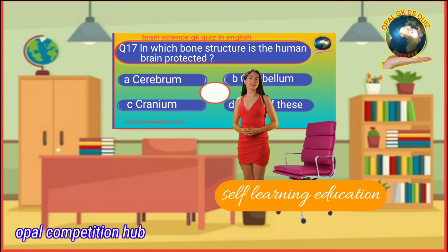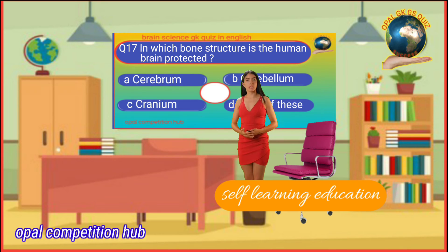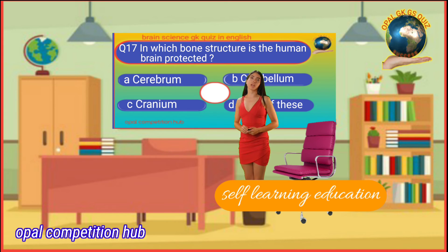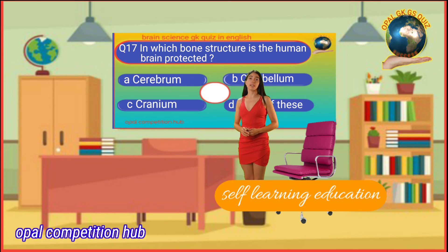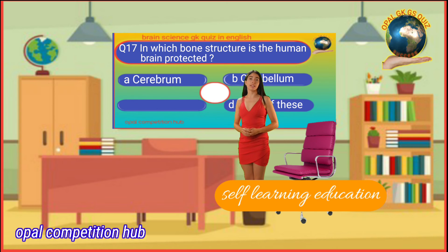Question number 17: By which bone structure is the human brain protected? Option A: Cerebrum. Option B: Cerebellum. Option C: Cranium. Option D: None of these. Your time starts now. Your answer will be Option C: Cranium.